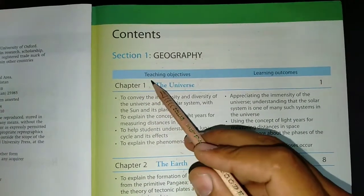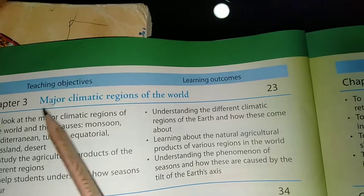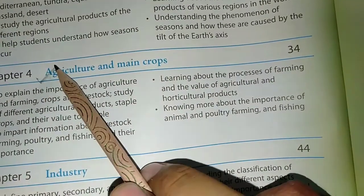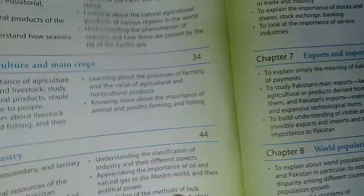Look at the geography portion. I am going to mark the chapters which you are going to learn in term 1. Your first chapter is the universe, second is the earth, third is major climatic regions of the world, fourth is agriculture and main crops, and fifth is industries. These are five chapters for term 1.